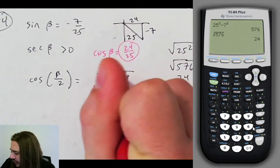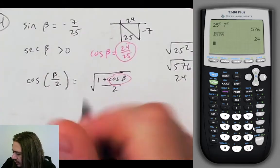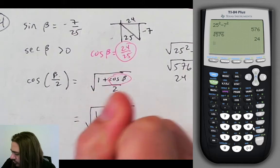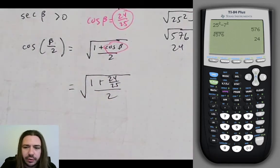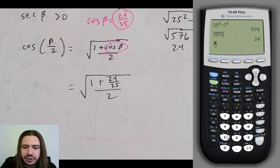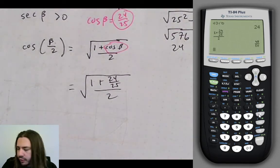So this is going to equal the square root of 1 plus 24 over 25 over 2. I'm going to use the calculator to simplify what we've got going on inside here. So let's go ahead and do that. We've got, let's make a big fraction, 1 plus 24 over 25, all divided by 2. And so that's 49 over 50.